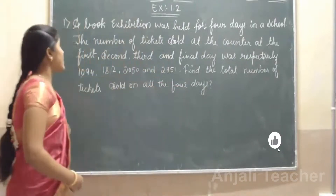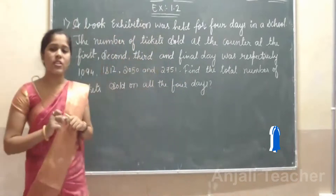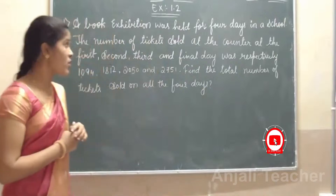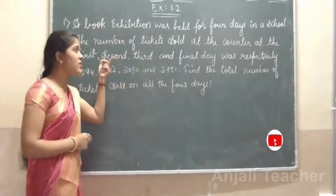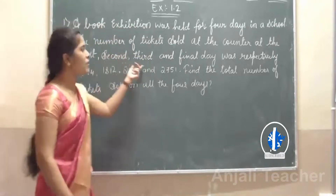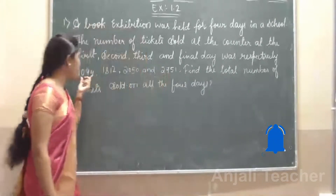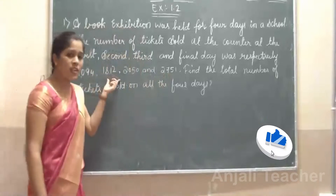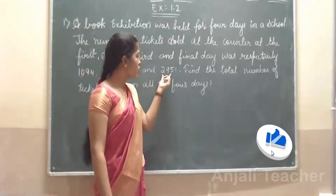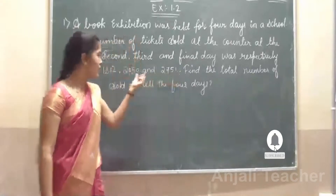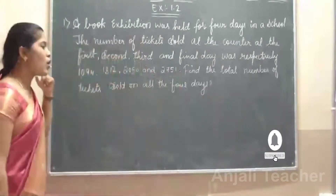The question says: a book exhibition was held for four days in a school. The number of tickets sold at the counter on the first, second, third, and fourth day respectively — first day: one thousand ninety-four, second day: one thousand eight hundred twelve, third day: two thousand fifty, and the fourth day: two thousand seven hundred fifty-one. These are the total tickets sold on the respective days. Find the total number of tickets sold on all four days.